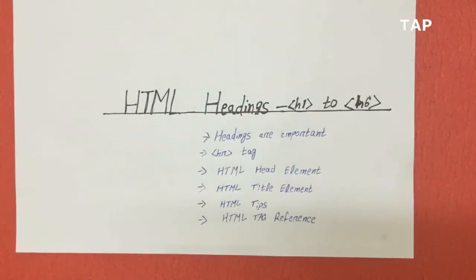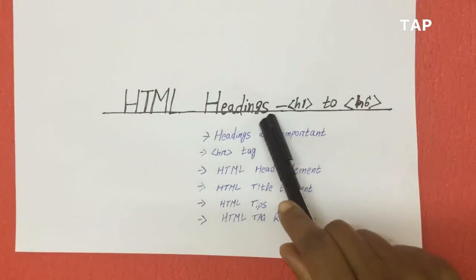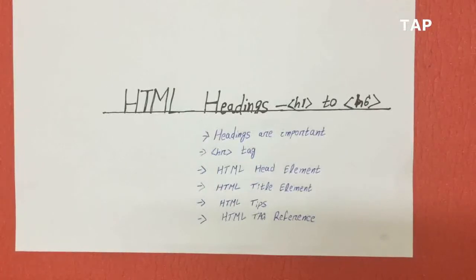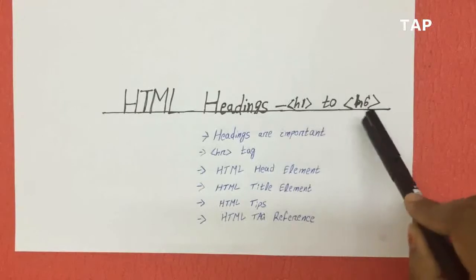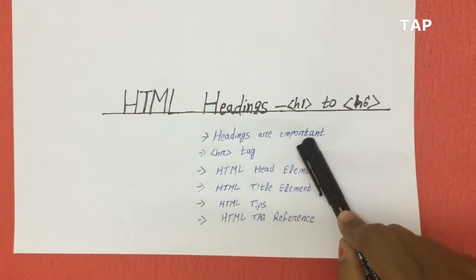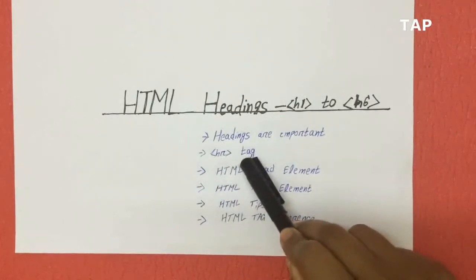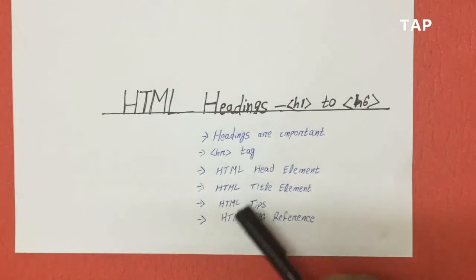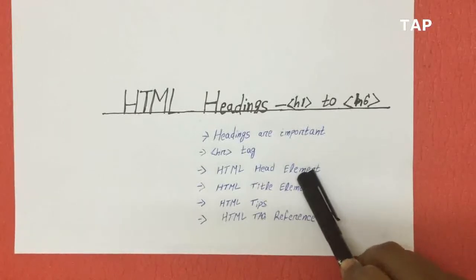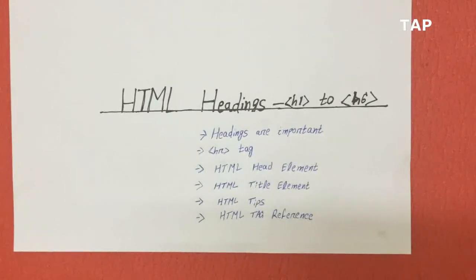Hello friends, welcome to HTML tutorials. Today I will explain HTML heading tags. There are six types of headings, h1 to h6. These headings are very important for your document. I will also tell you about the HR tag, the HTML head element, the HTML title element, and some tips at the end of this tutorial. So let's start.